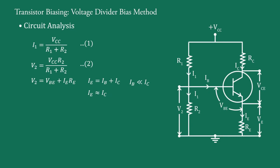Therefore, taking here IE equal to IC, we can write V2 equal to VBE plus ICRE. And therefore, IC equal to V2 minus VBE upon RE, say equation 3.